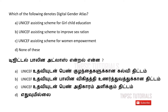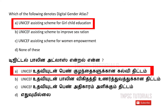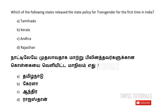A) UNICEF assisting scheme for girl child education. B) UNICEF assisting scheme to improve sex ratio. C) UNICEF assisting scheme for women empowerment. D) None of the above. The answer is A — UNICEF assisting scheme for girl child education. Sixth one: Which of the following states